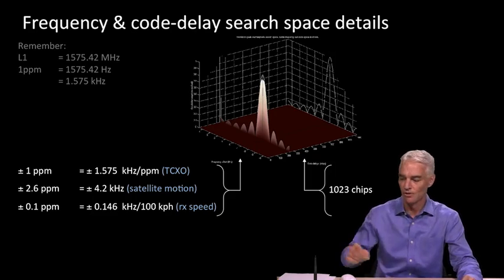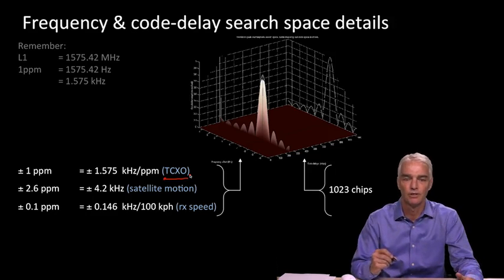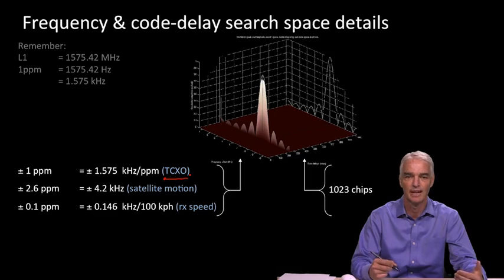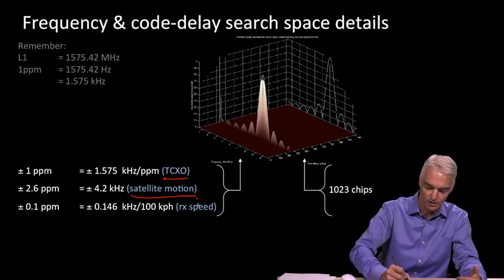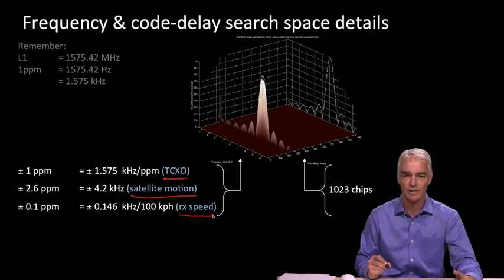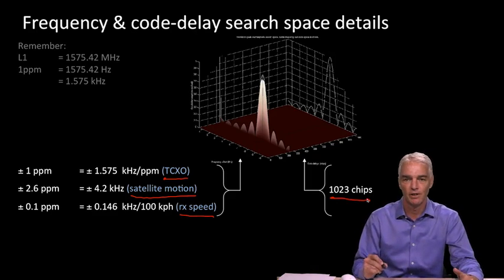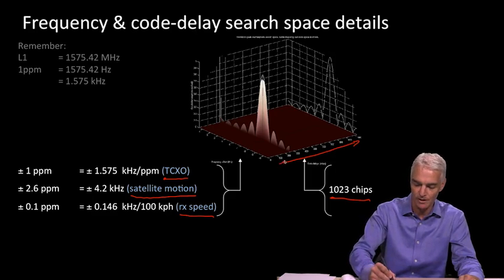There are many contributors to the frequency offset. One contributor is the TCXO value — the temperature compensated crystal oscillator, which is typically the oscillator in a GPS receiver. For every ppm (part per million) of offset that oscillator has, you have to search an extra ppm of search space because your oscillator is not generating the exact right frequency. Then satellite motion and receiver motion affect the received frequency because of Doppler. On the code delay side, it's quite simple: there are 1,023 chips in the PRN code, and you have to search all of those chips. You have to search all of that space in a typical receiver, and it doesn't change.